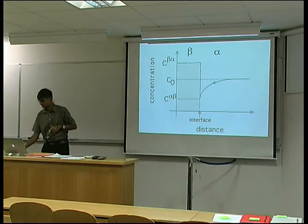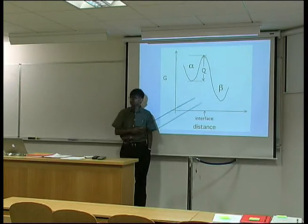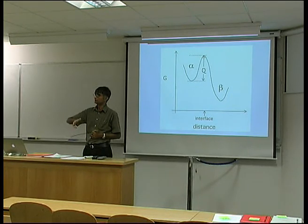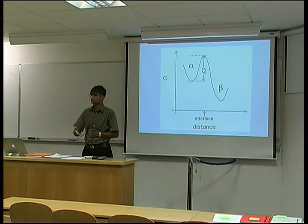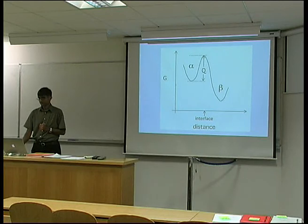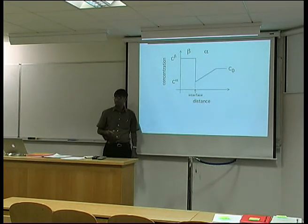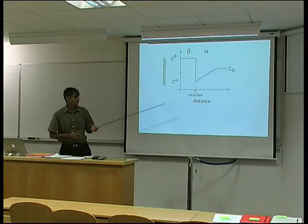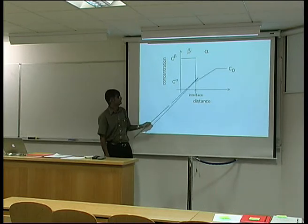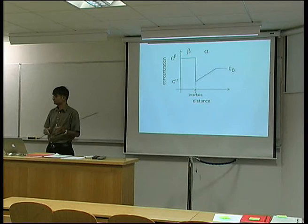We have to transfer atoms across the boundary from alpha to beta, and there will be an activation barrier because the crystal structures are not identical. But we are going to ignore this — we say that almost all the free energy is being dissipated in the diffusion process. The first approximation I'm going to make is that the variation of concentration ahead of the interface is linear, i.e. the gradient is constant. In practice it's an error function, but I don't want to deal with that mathematics, so I'll assume a constant gradient — it's a very good approximation.